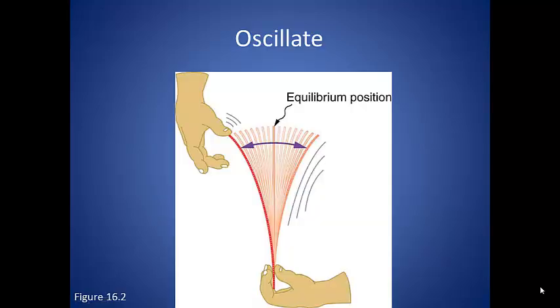If you take a ruler, hold it on one end, pull it back on the other end and let go, the pulled back end will oscillate back and forth between those two points. This oscillation is what we refer to as simple harmonic motion.